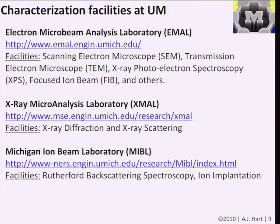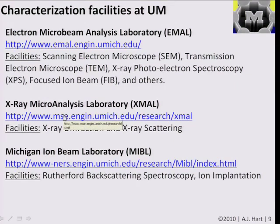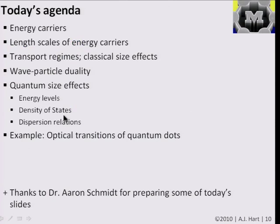There are a number of characterization facilities on U of M's North Campus. The EMAL, or Electron Microbeam Analysis Lab, has electron microscopes, an XPS machine, and a focused ion beam for milling small samples. There is an X-ray lab in the Gerstacker Building and an ion beam lab. These are shared facilities you can look into if you want to use or see some of this equipment. Any questions about the characterization subject?